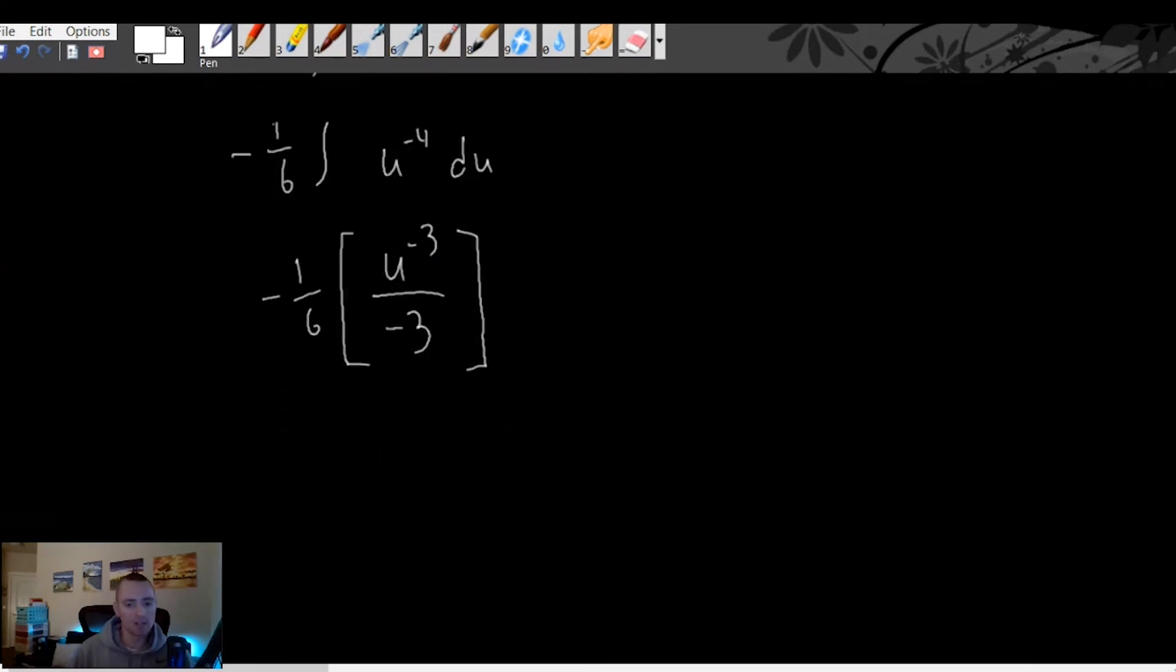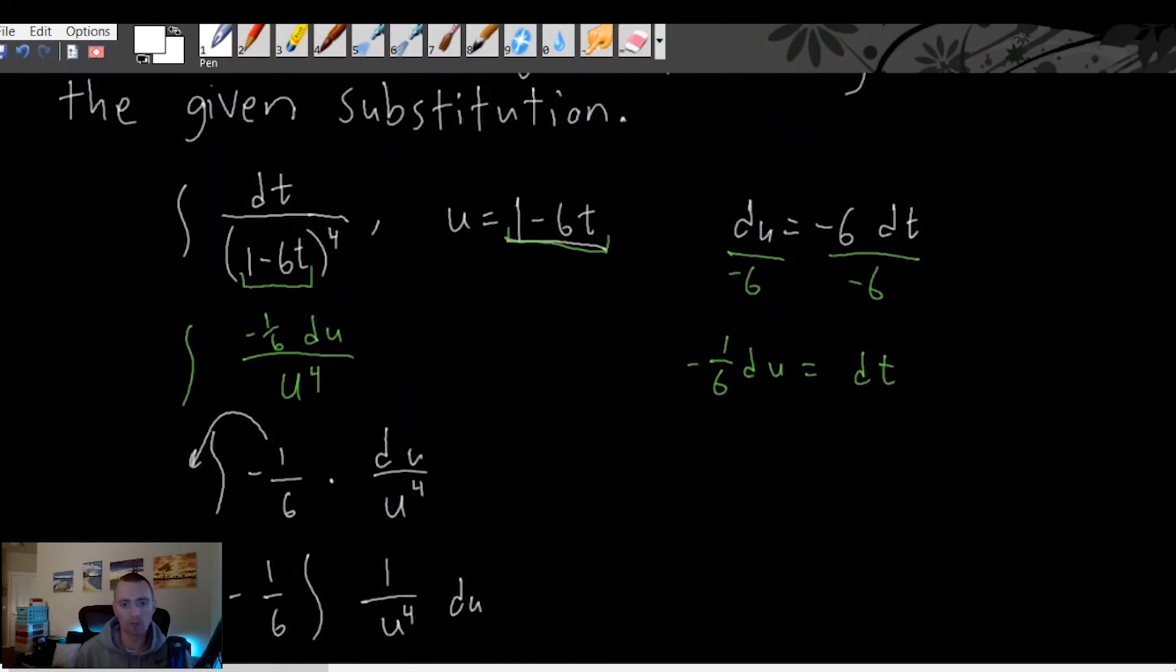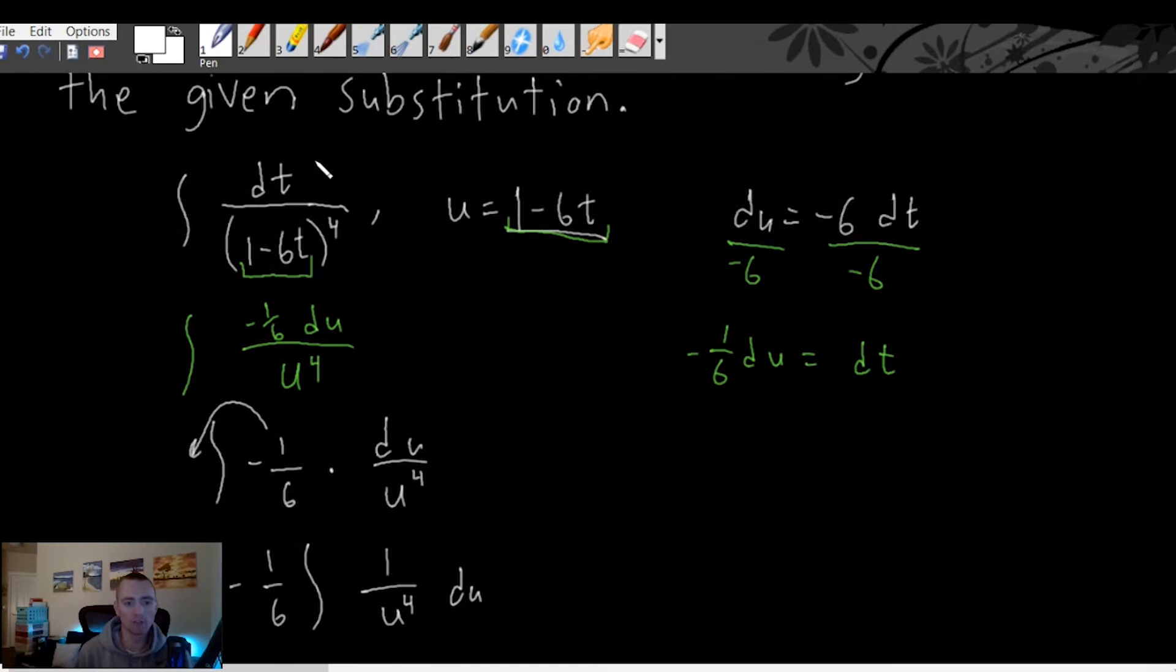So now that we have actually integrated it, we want to undo our U substitution because we were given some function that was a function of t. We want to end up with a function of t. We don't want to change it to u because really in the context of this problem the u doesn't actually have any meaning. We want to keep our variable the same.